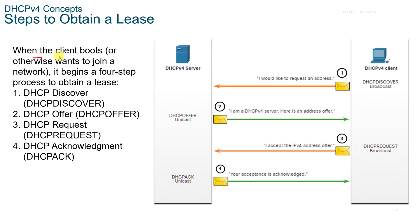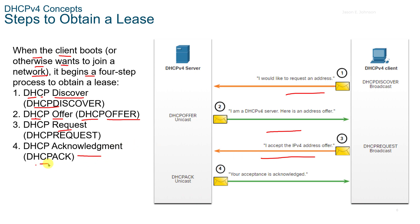In the steps to obtain a lease, when the client boots up or wants to join a network, it begins a four-step process. It sends a DHCP Discover. The server then sends back a DHCP Offer. The client sends a DHCP Request indicating it accepted the offer. Then the server acknowledges with a DHCP ACK, confirming the v4 address is assigned to that client.